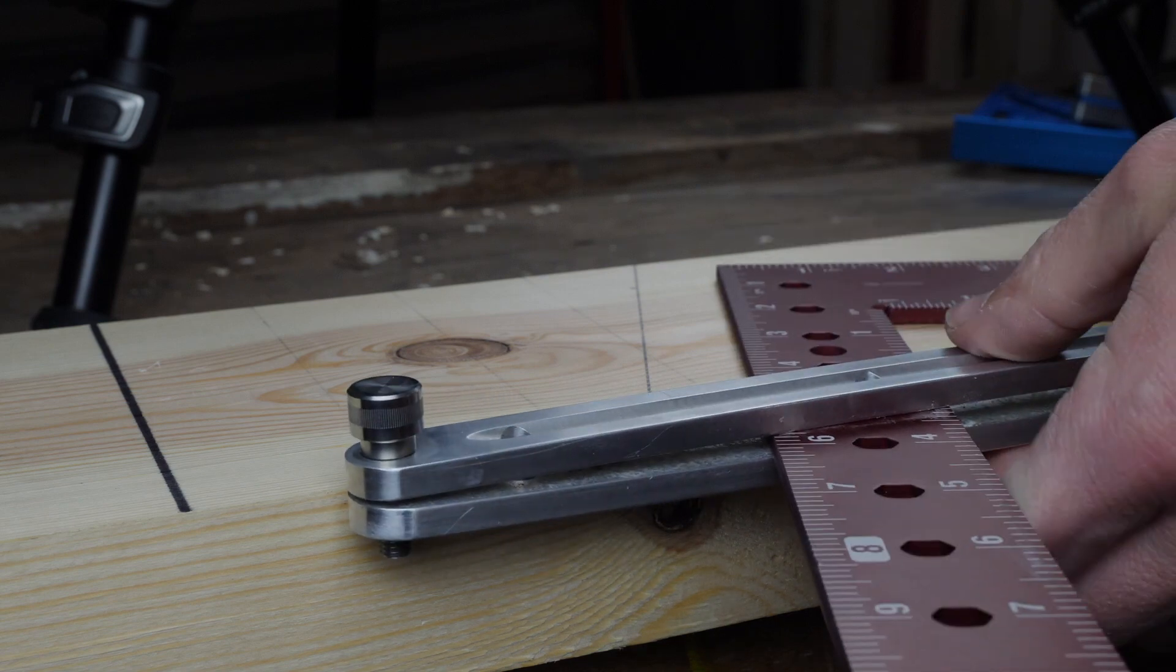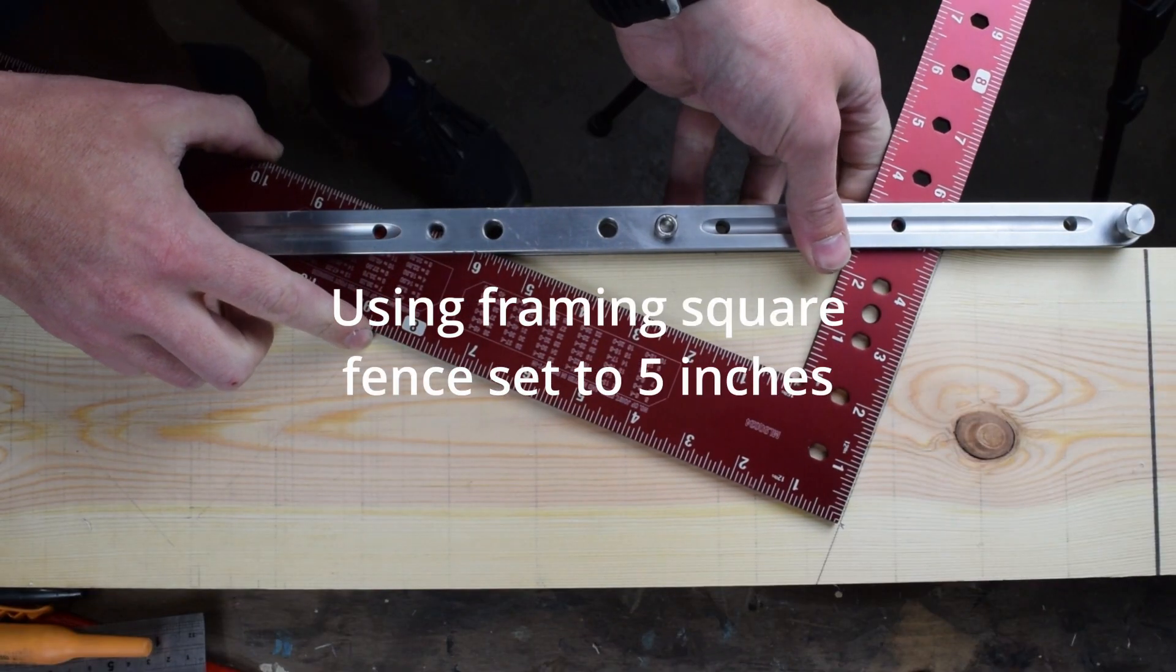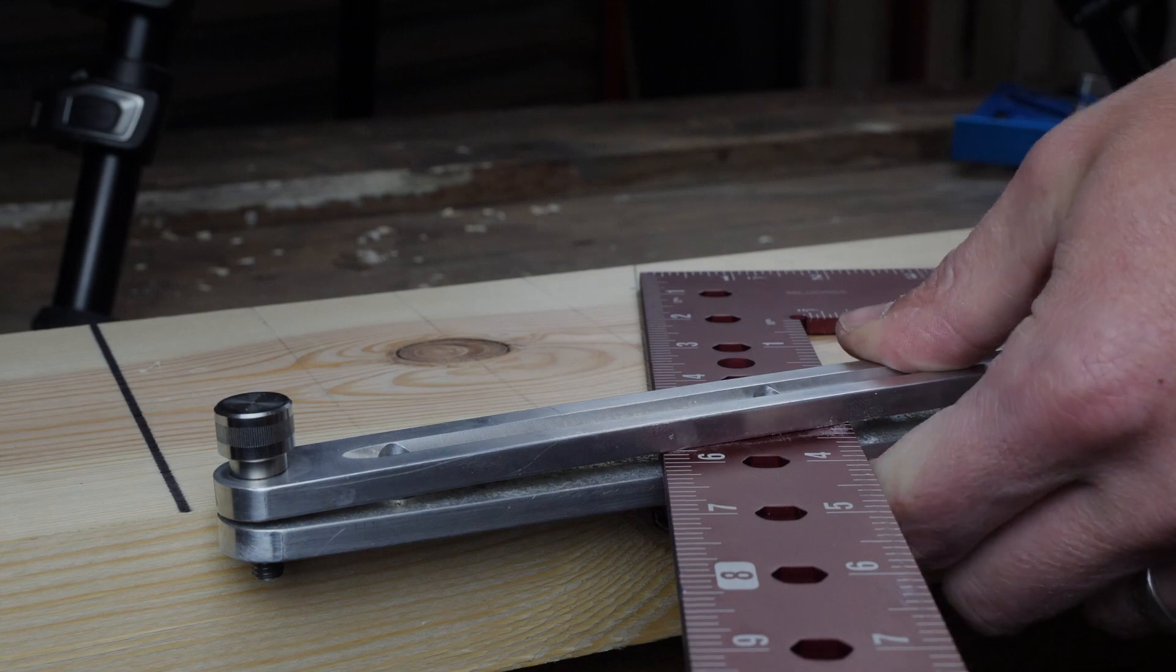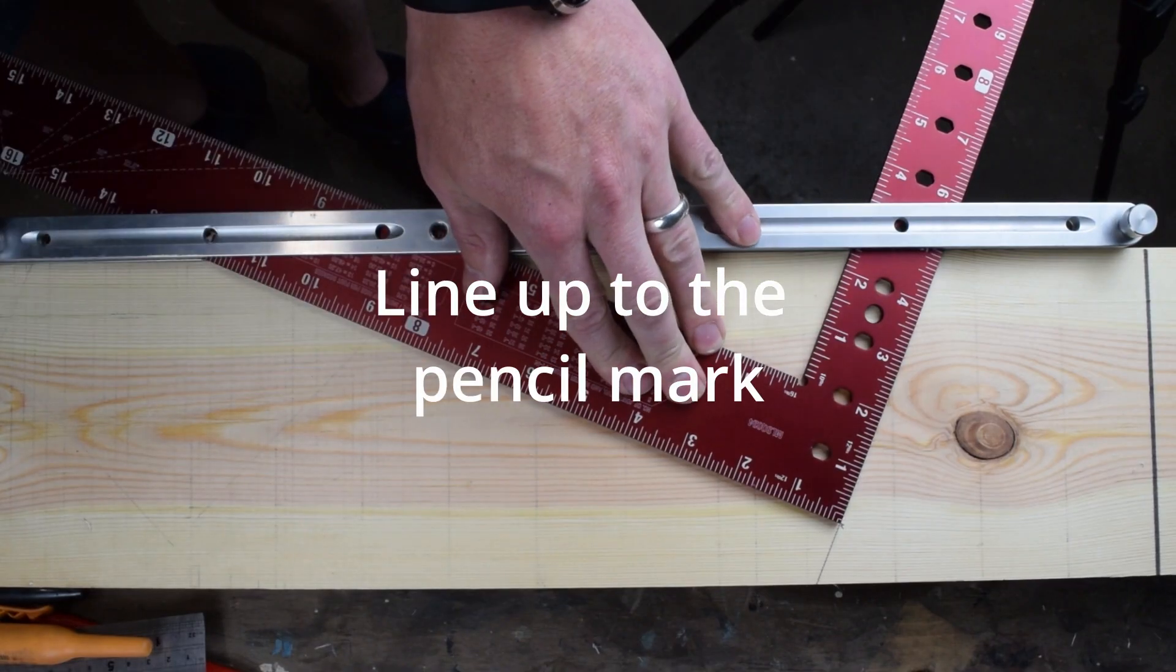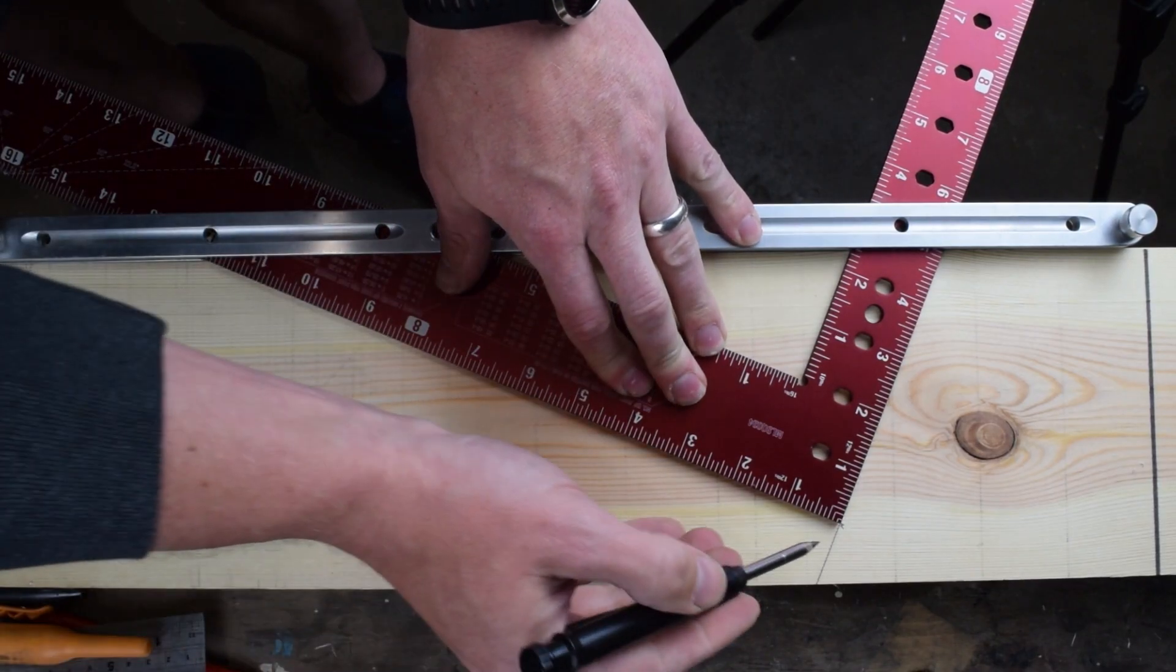I use a standard framing square with a fence, set to five inch on the rise and 12 on the other end. If it lines up with the mark I made then it should be good, but we'll go through the process anyway.